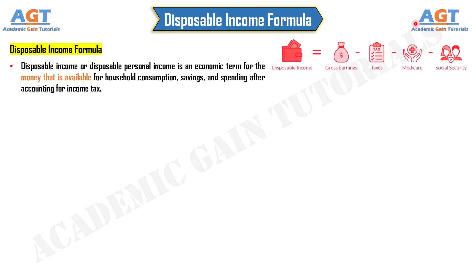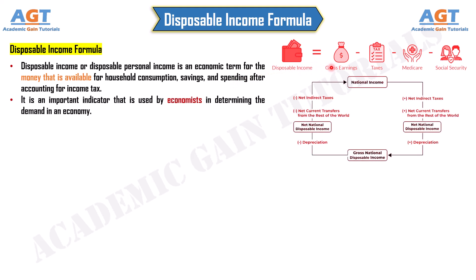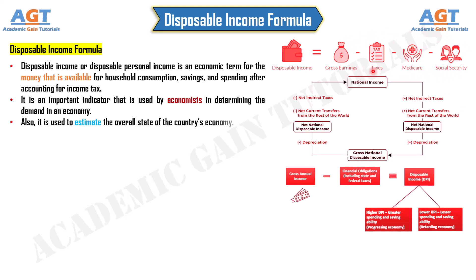Disposable income, or disposable personal income, is an economic term for the money that is available for household consumption, savings, and spending after accounting for income tax. It is an important indicator used by economists in determining the demand in an economy, and it is also used to estimate the overall state of a country's economy.